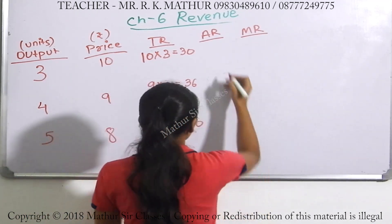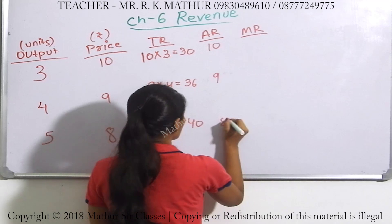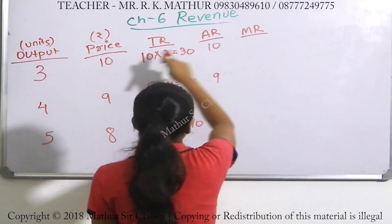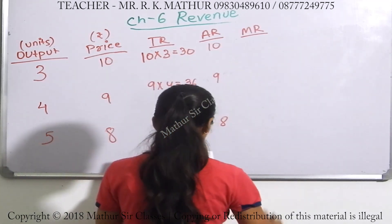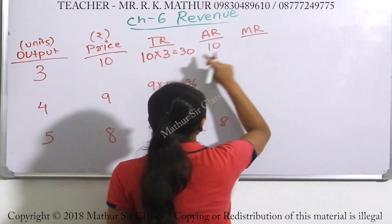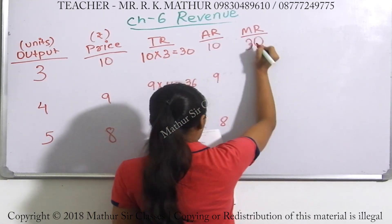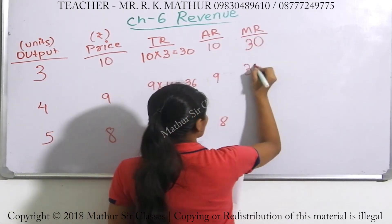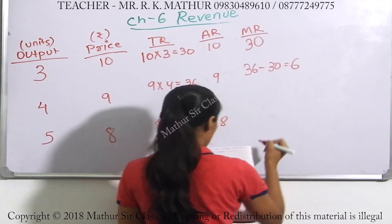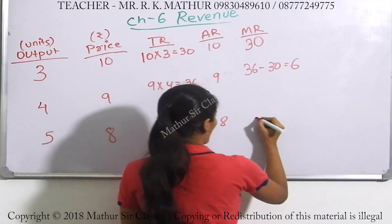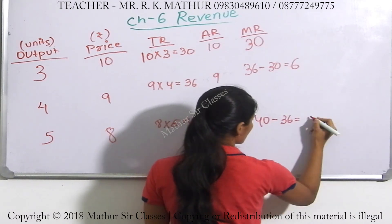Average revenue will be 10, 9, and 8 — the price is your average revenue. After that, marginal revenue: 36 minus 30 is 6, and 40 minus 36 is 4.